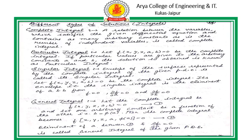For the general integral: in the complete integral, we have two constants A and B. If from any constant, say B equals a function of another constant A, then the complete integral has only one constant A. Then ∂Z/∂A equals some function of A, and ∂Z/∂A equals 0 gives the general integral of the partial differential equation.